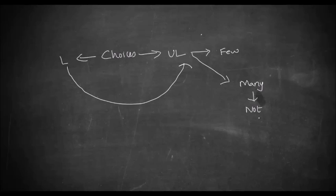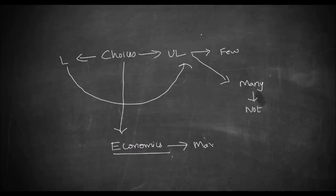You are making a choice between wants which can be fulfilled and wants which cannot be fulfilled. This choice-making is also what economics is about — you are trying to select the best option that will give you maximum satisfaction out of the limited resources available to you. Economics revolves around this, and there are certain other dimensions we'll see in subsequent videos.